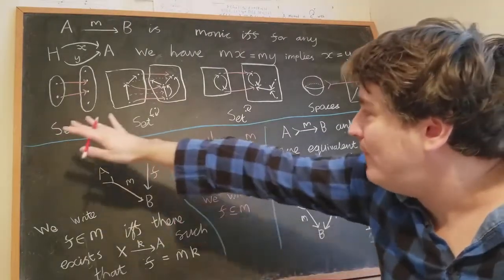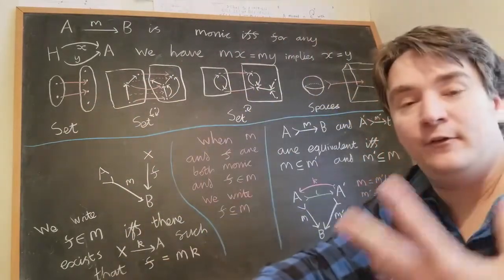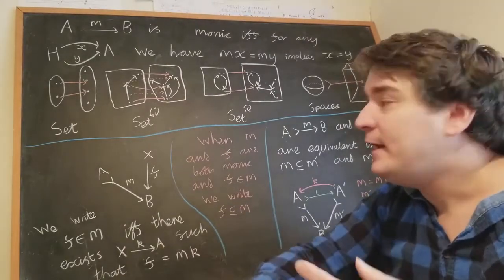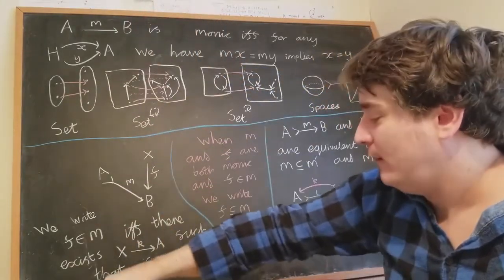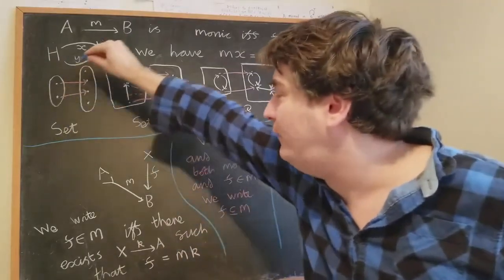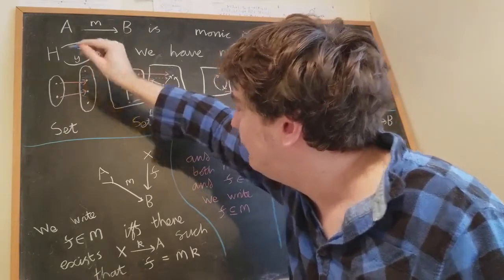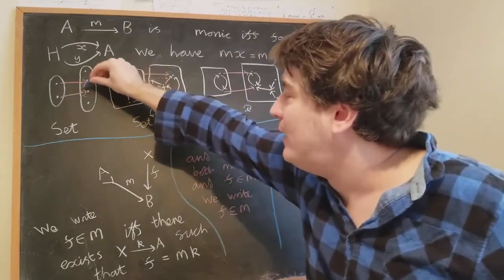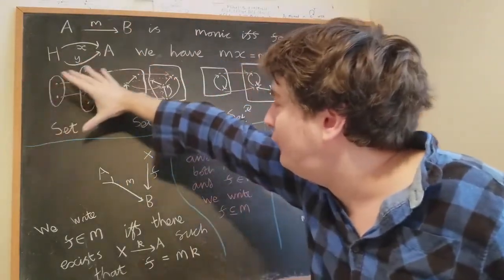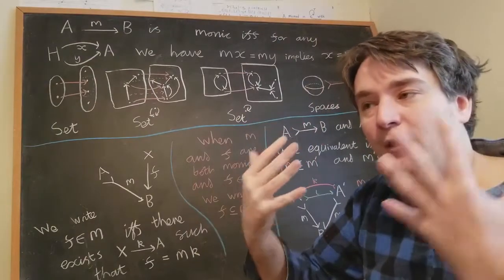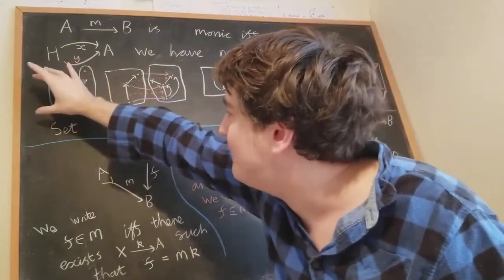Here are some examples of monics in different categories. In each case the monic is selecting a kind of part of the target object. In the category of sets, a monic is just a one-to-one function — it's picking out a subset. In this sense the monic is representing that sub-object, because in the category of sets the objects are sets, a sub-object is a subset, and it's being selected by this monic.